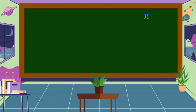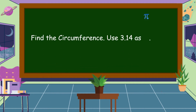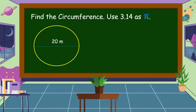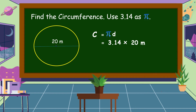Let's study the following examples. Find the circumference. Use 3.14 as the approximate value of pi. The diameter of this circle is 20 meters. To find the circumference, we're going to use this formula: circumference is equal to pi times diameter. The value of pi is 3.14, times diameter which is 20 meters. So let's multiply: 3.14 times 20.